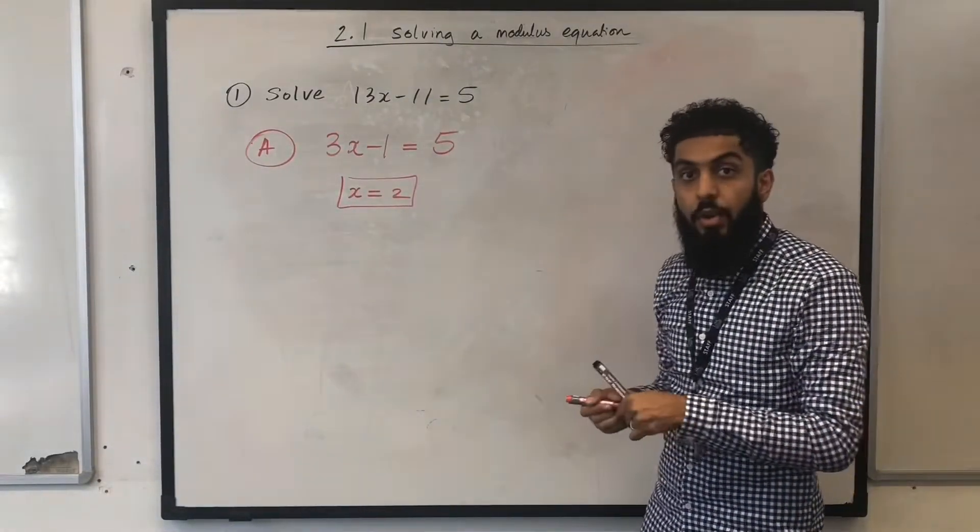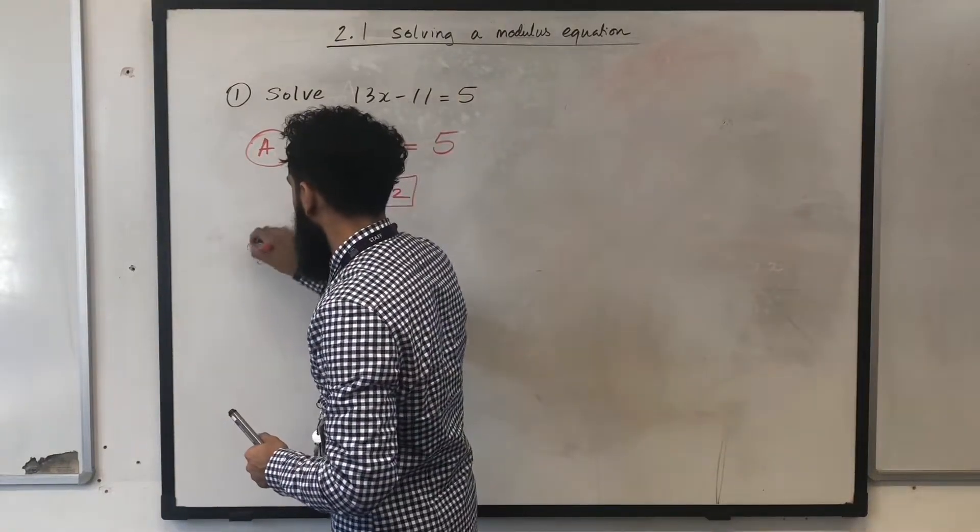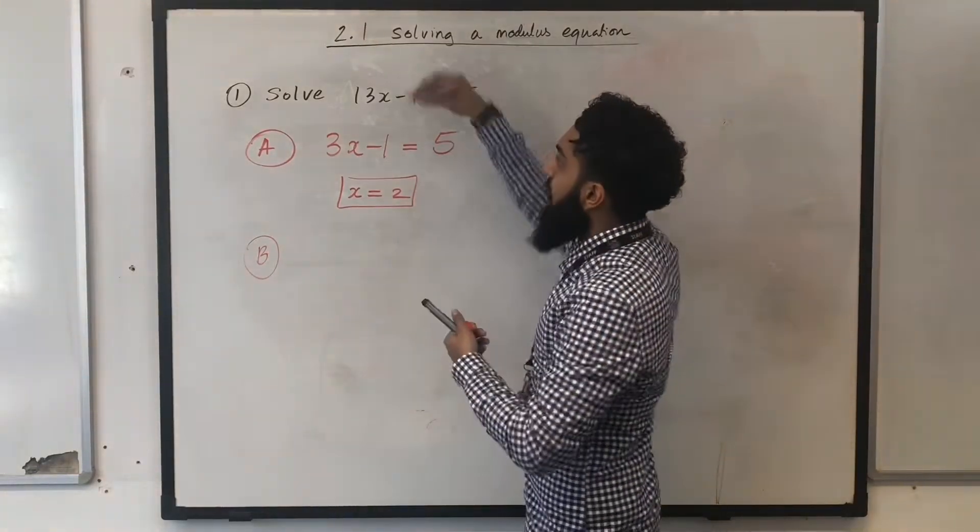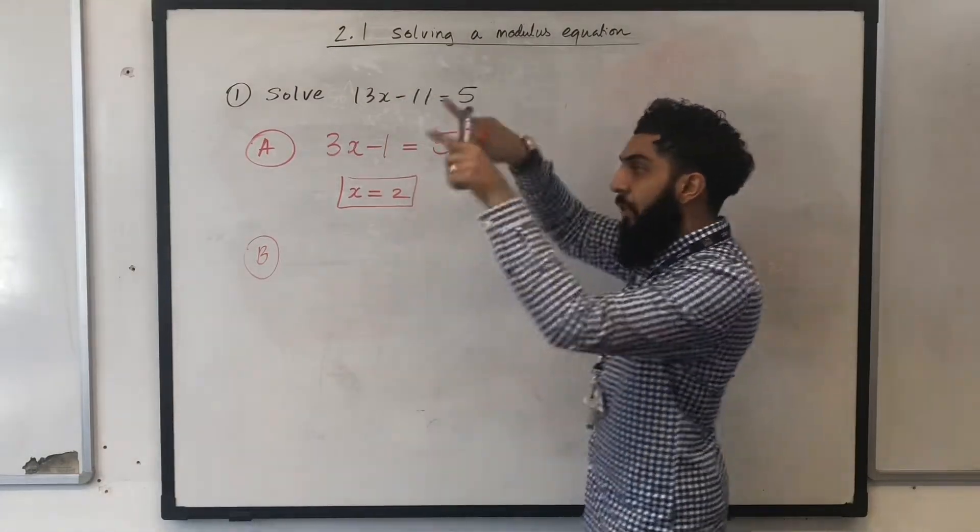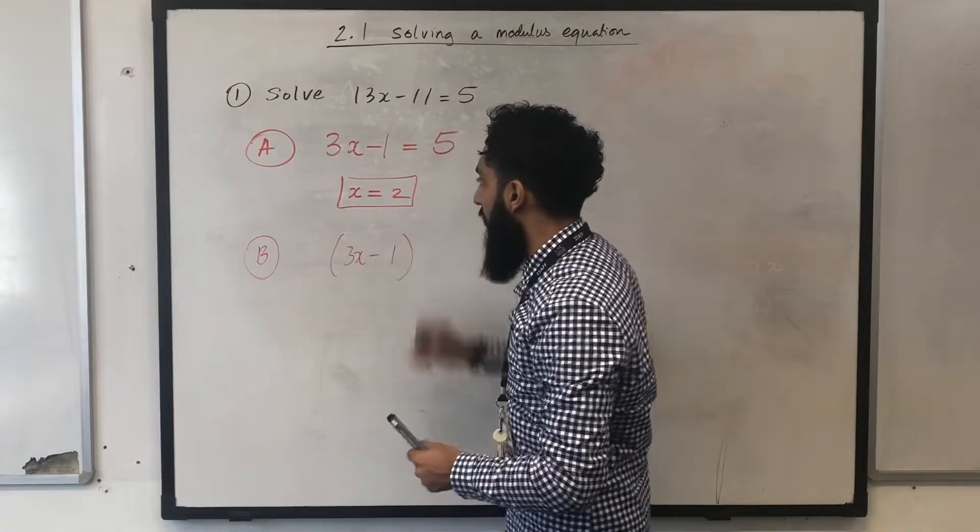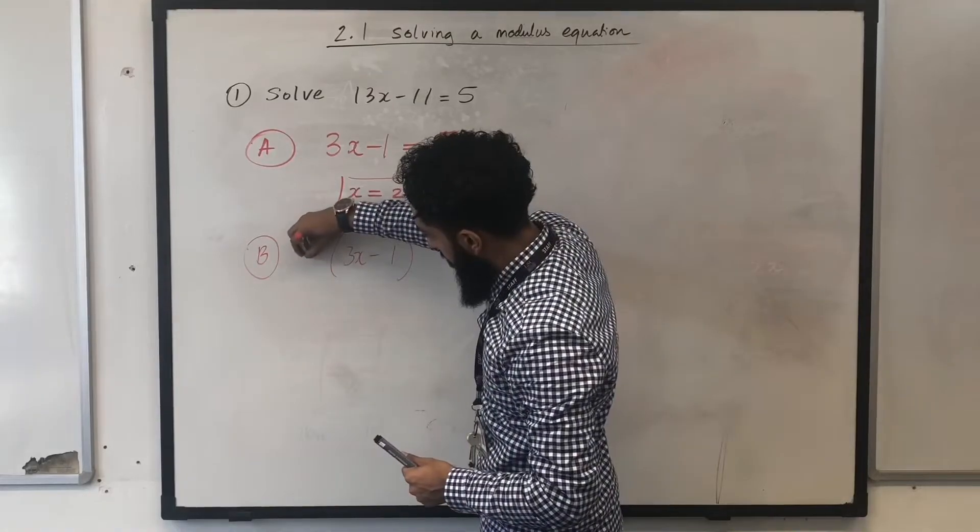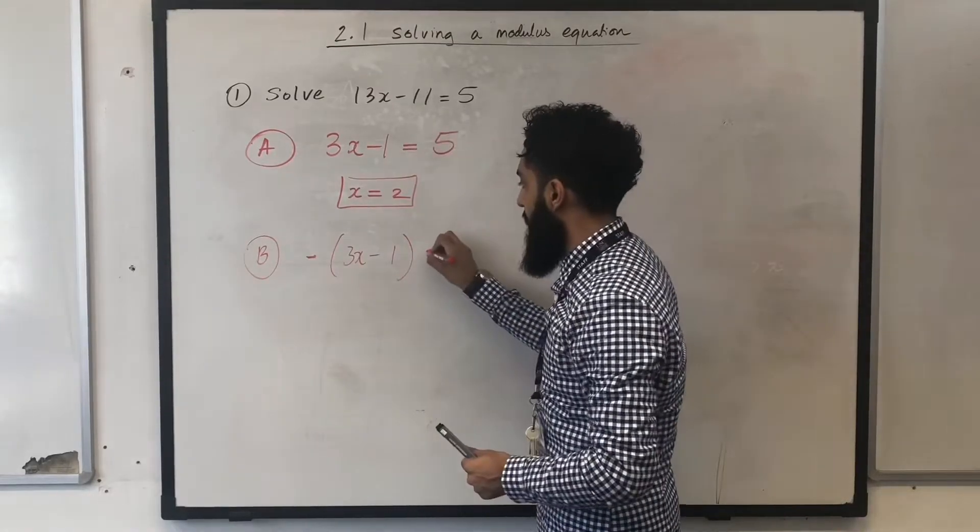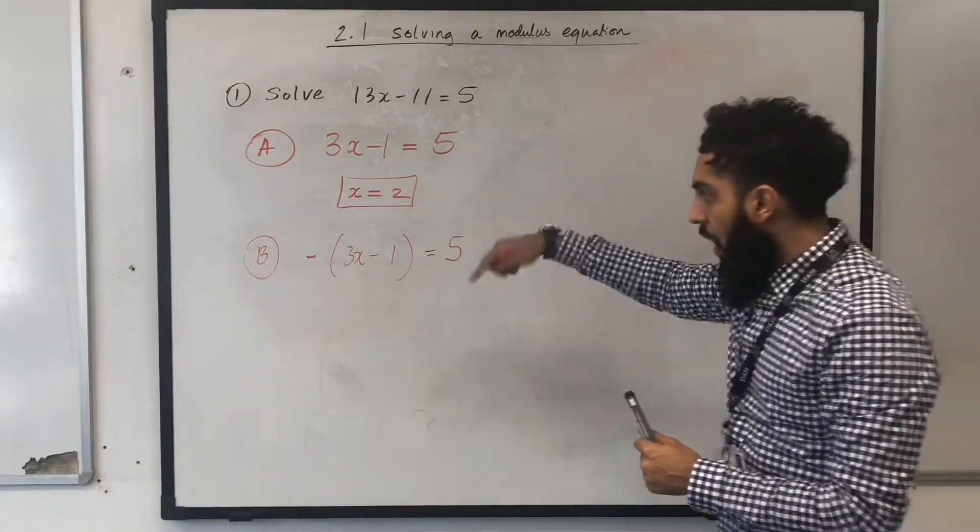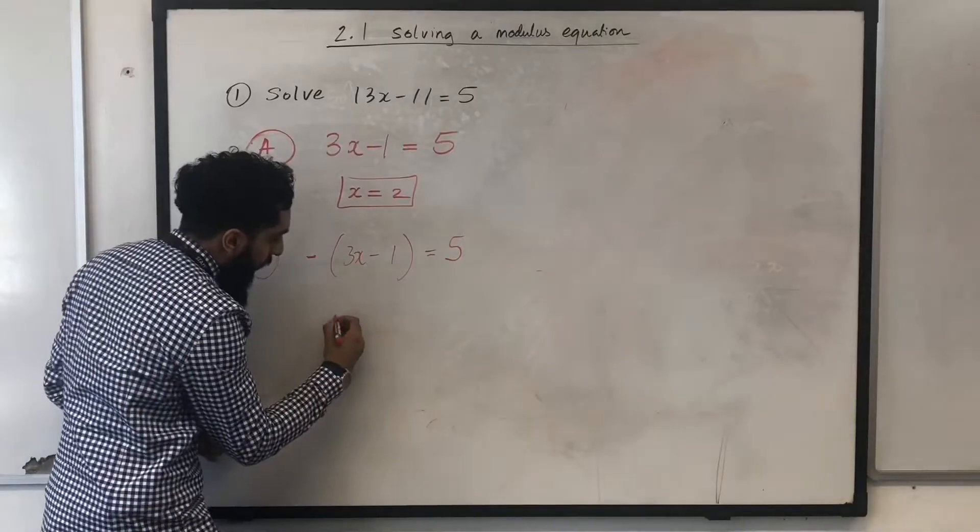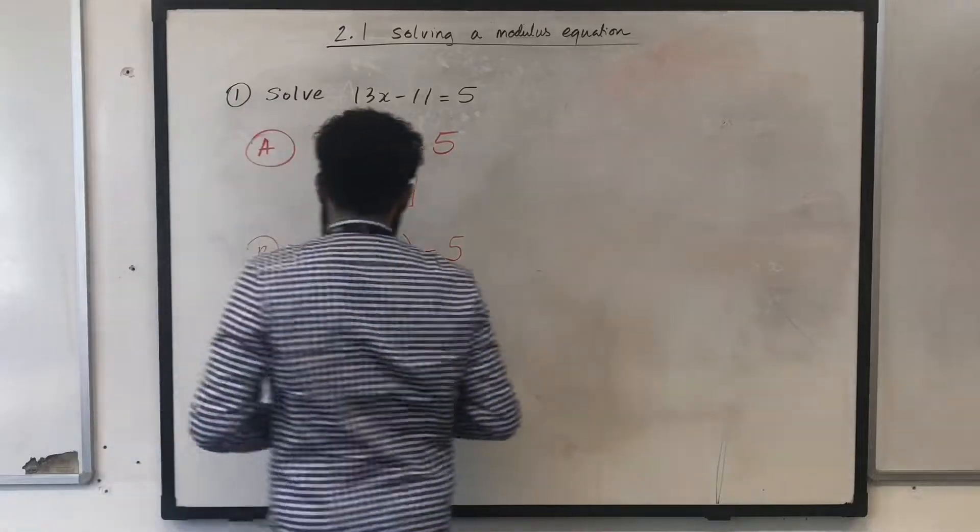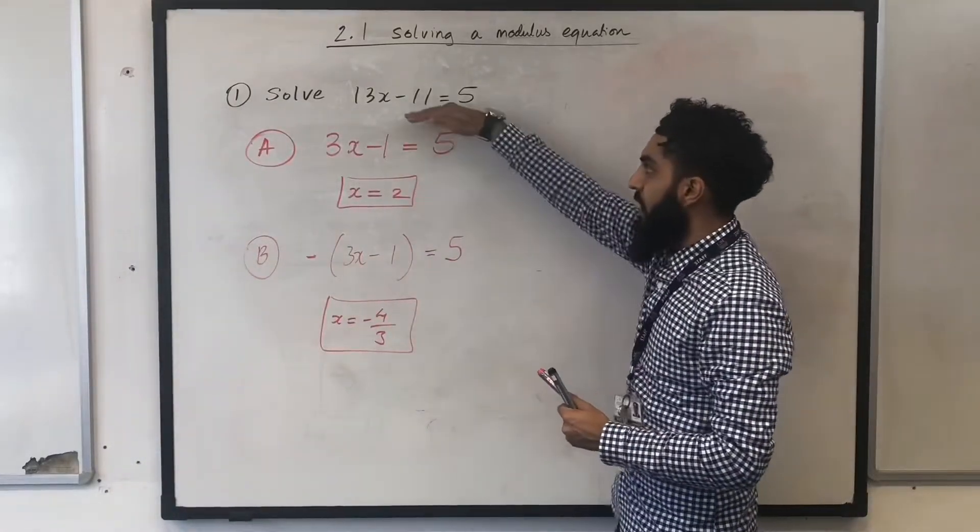The second equation, I am going to call equation B. Equation B will just be whatever you have inside the modulus, you put it in brackets, so 3x-1 in brackets, and you stick a minus in front of it, equal to 5. Now, you solve this equation. After solving, you get x equal to minus 4 over 3. So, these are the two solutions to this modulus equation.